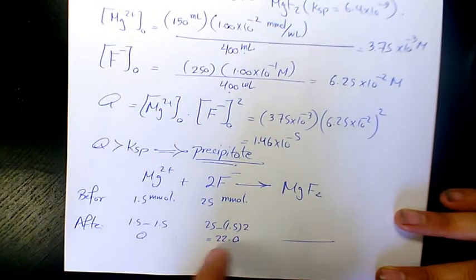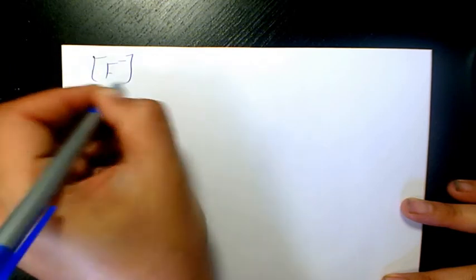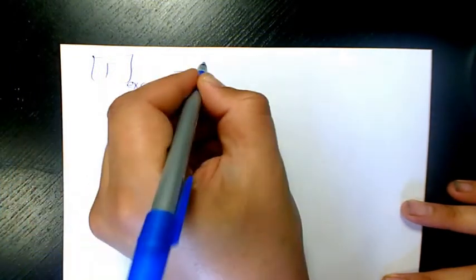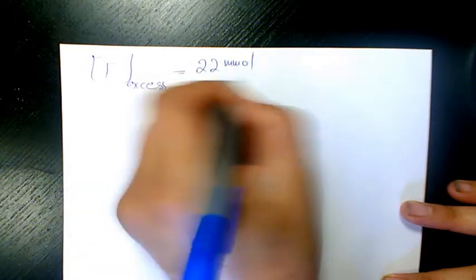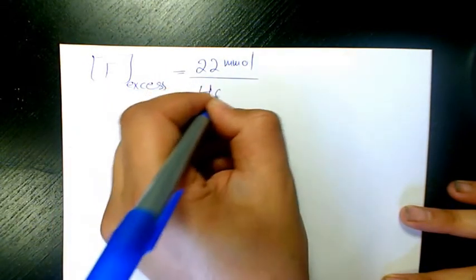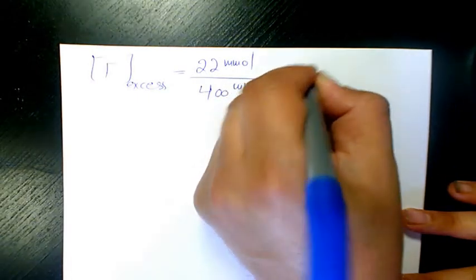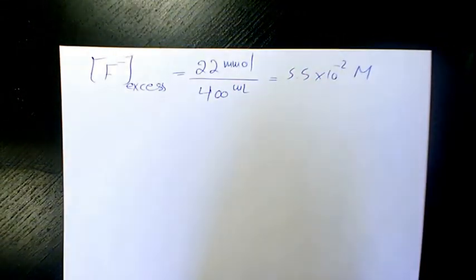F⁻ is in excess. The excess number of moles is 22 millimoles and total volume is 400 mL, giving an initial fluoride concentration before equilibrium of 5.5×10⁻² M.